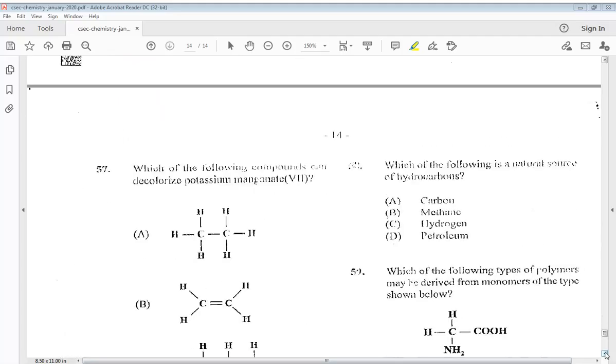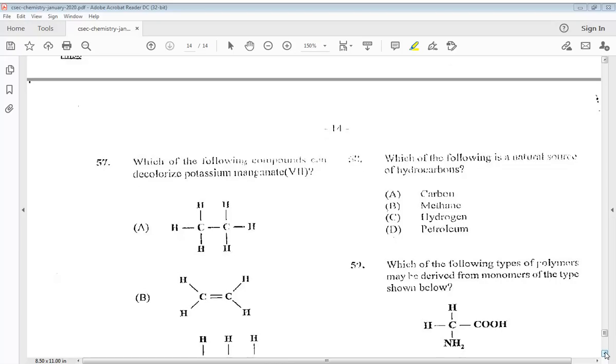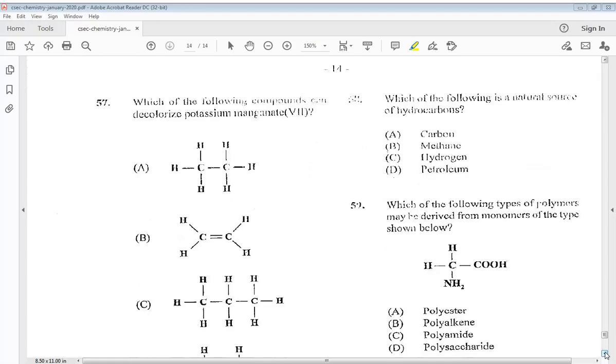Question 57. Which of the following compounds can decolorize potassium manganate 7? So right away we know it's going to be B.